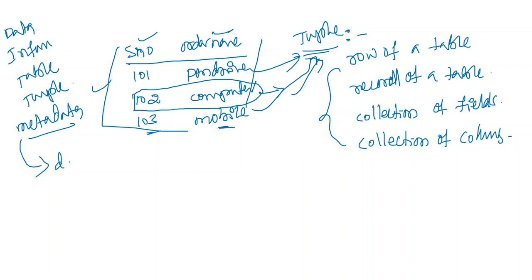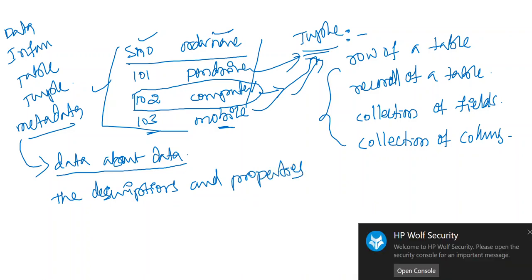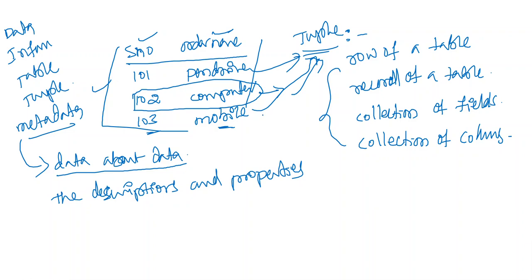Data about data is called metadata. The descriptions and properties of data are also referred to as metadata — descriptions and properties of the source data.